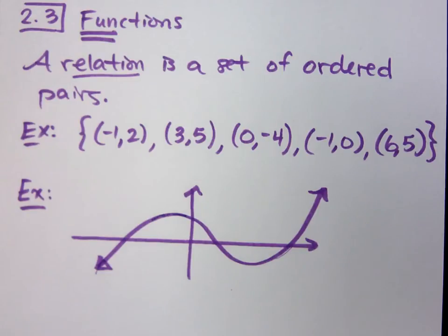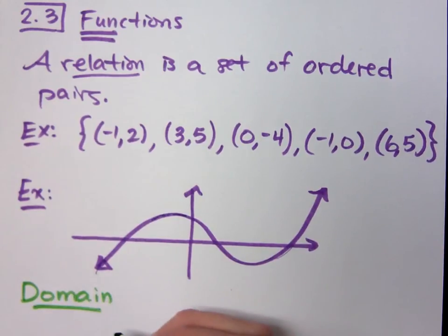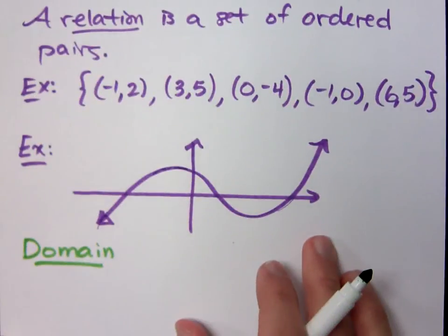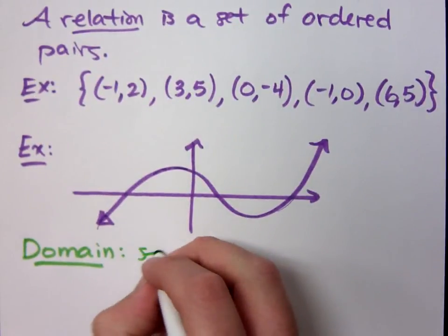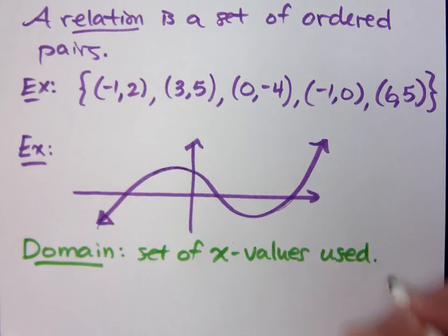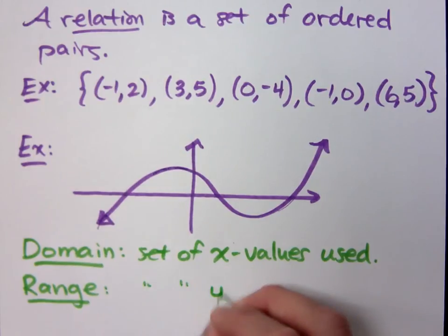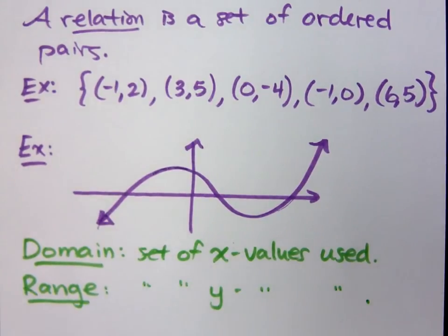Now, with these, we like to talk about things called the domain and range. Remember the domain? The domain is the set of x values used. And the range is the set of y values that are used in your picture. That's all it is. Domain is x, and the range is y. We did this back in section 0.310. This is not new. Domain comes first, then range. X comes before y, alphabetically.